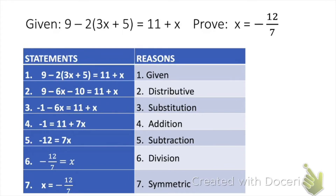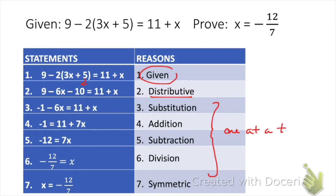The second example is a little bit longer, but we still see that given statement and what we're trying to prove. The given is listed as our first reason. Going from step 1 to step 2, we use distribution since we're multiplying both sides by negative 2, which gives us negative 6 minus 10 in the second step. Each step uses a different property — distribution, substitution, addition, subtraction, division — and finally, we rewrite the result as x equals negative 12 over 7 using the symmetric property, which just means we can swap both sides.